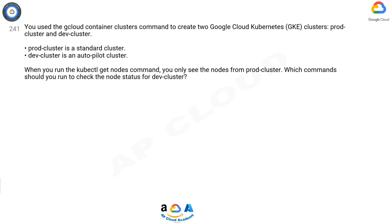Question 241. You used the Cloud Container Clusters command to create two Google Cloud Kubernetes (GKE) clusters: prod-cluster and dev-cluster. Prod-cluster is a standard cluster; dev-cluster is an Autopilot cluster. When you run the kubectl get nodes command, you only see the nodes from prod-cluster. Which commands should you run to check the node status for dev-cluster?